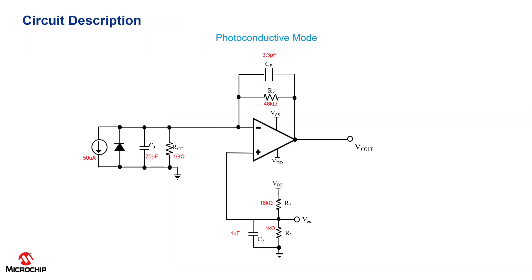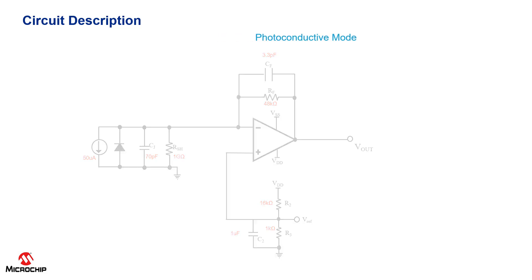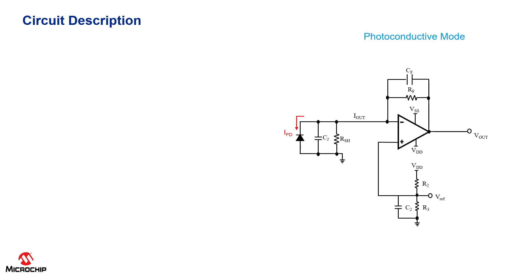Here's a photodiode amplifier circuit. In this circuit the photodiode is configured in reverse bias so we're operating in photoconductive mode. The circuit consists of a photodiode, a transimpedance amplifier and a reference voltage.